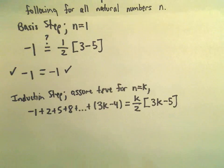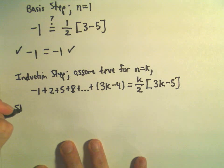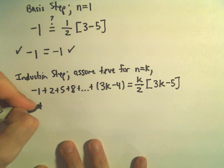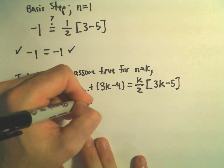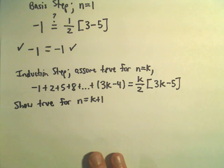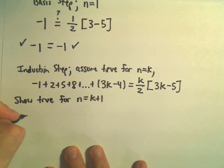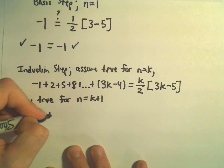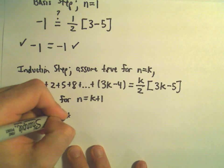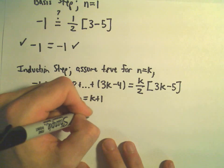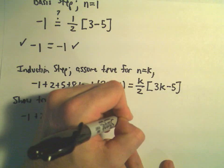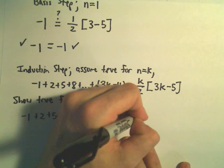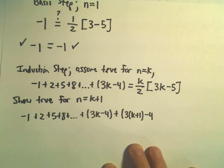And now we have to show that it's true for the value k plus 1. Okay, so we have to show it's true for n equals k plus 1. Well, if we plug that into the left side, we'll get negative 1 plus 2 plus 5 plus 8 plus dot dot dot,